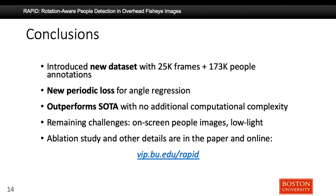To summarize, we introduced a new dataset for people detection and tracking from overhead fisheye videos with 25,000 frames and 173,000 people annotations. For the detection of rotated bounding boxes, we introduced a new periodic loss function for angle regression and showed that our proposed algorithm outperforms state-of-the-art algorithms with no additional computational complexity. Based on our visual evaluation, remaining challenges include on-screen people images and people detection in low illumination. Further details and an in-depth ablation study can be found in our paper and website. Thanks for listening.